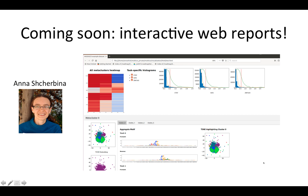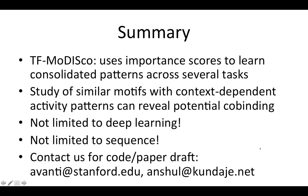We are going to be releasing this very soon. Thanks to my lab mate Anna Sherbina for preparing really nice user-friendly interactive web reports. To summarize: TF-MoDISco uses importance scores to learn consolidated patterns across several tasks. If you study similar motifs that have different activity patterns depending on the sequence that they occur in, you can potentially find co-binding patterns. It's not limited to deep learning — any method that produces importance scores could plug into this. It's certainly not limited to sequence — you could apply it to different kinds of tasks, maybe finding footprints in accessibility profiles, or comparing importance scores on an intermediate convolutional layer. So there's a lot of potential to extrapolate to other domains.